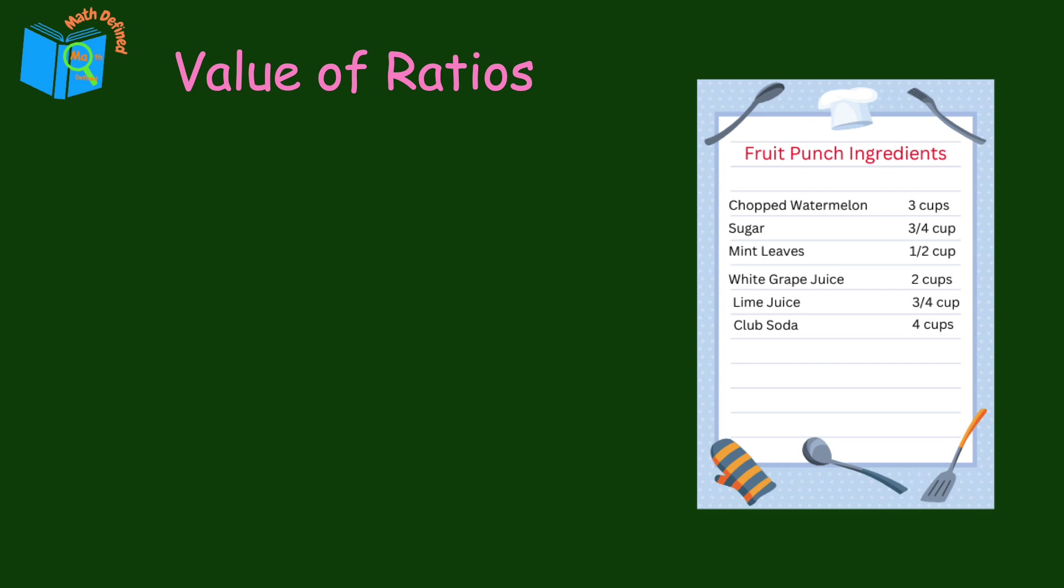For example, let's find the ratio of club soda to white grape juice in the fruit punch recipe. From the list we see club soda is four cups and white grape juice is two cups. So the ratio written as a fraction is four over two. The value of the ratio is found by dividing the first quantity by the second quantity. Four divided by two is two.